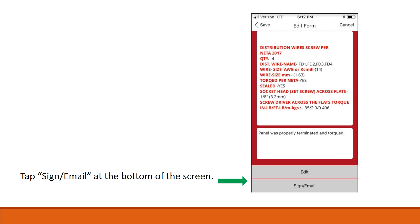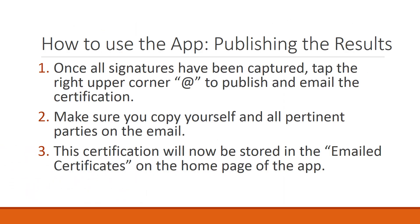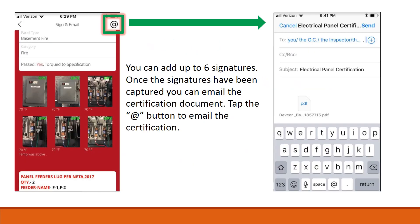Publishing the results. Once all signatures have been captured, tap the upper right corner to publish and email the certification. Make sure you copy yourself and all pertinent parties on the email. This certification will now be stored in the emailed certificates on the home page of the app. You can add up to six signatures. Once the signatures have been captured, you can email the certification document. Tap the hat button to email the certification.